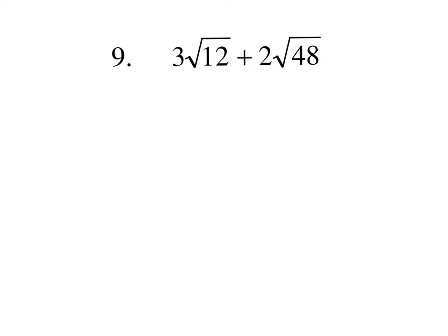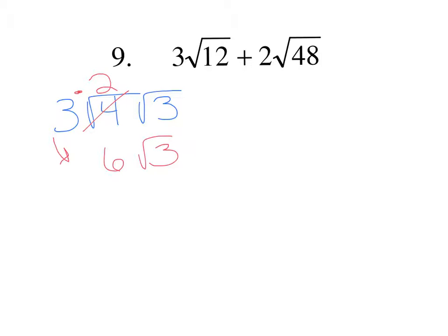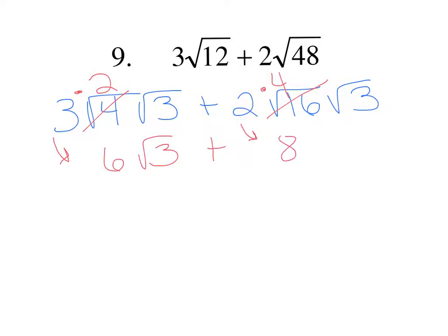On number 9 we simplify: square root of 12 is 4 times 3, so the square root of 4 becomes 2, multiplied by the 3 out front gives 6 square root of 3. The 48 is 16 times 3, so the square root of 16 is 4, multiplied by the 2 out front gives 8 square root of 3. They're both square root of 3, so 6 plus 8 is 14 square root of 3.